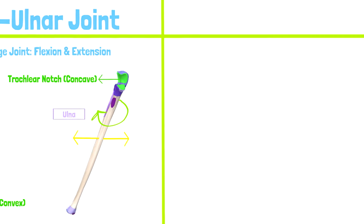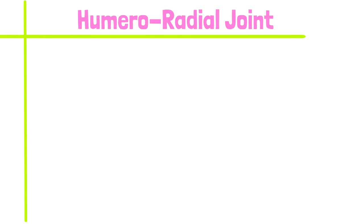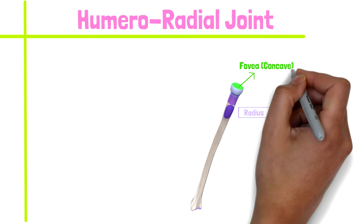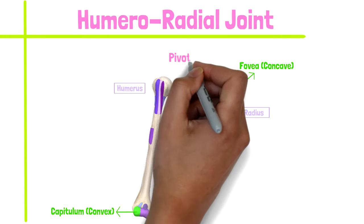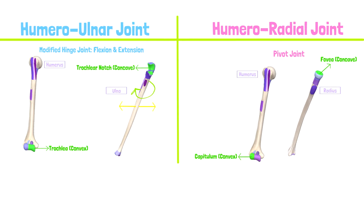Now let's examine the humeral radial joint. The humeral radial joint is an articulation between the cup-like fovea of the radial head and the rounded capitulum of the humerus. It is typically classified as a pivot joint, with the radial head pivoting around the humeral capitulum.